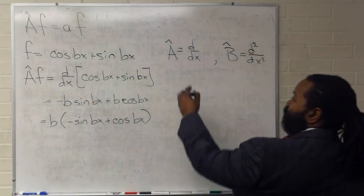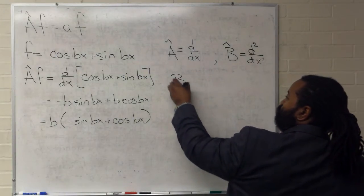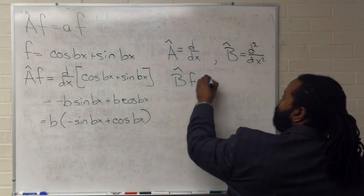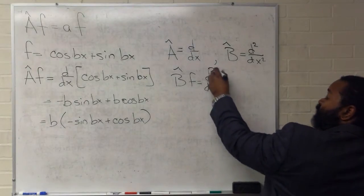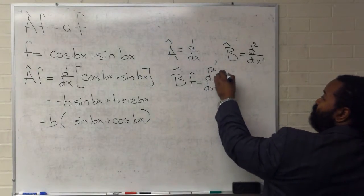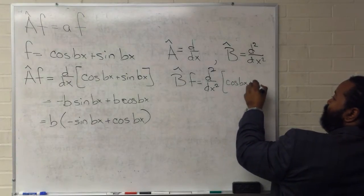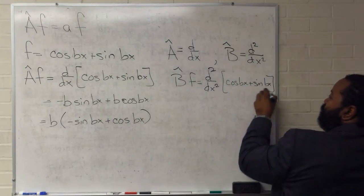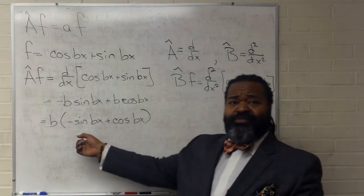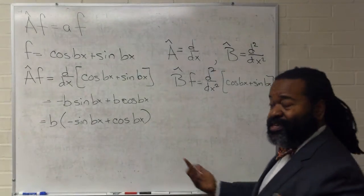If we want to try this with operator B, we would do the same thing. This is the second derivative of cosine bx plus sine bx. And in this case, because we already have the first derivative done, we're just going to continue from there for the second.